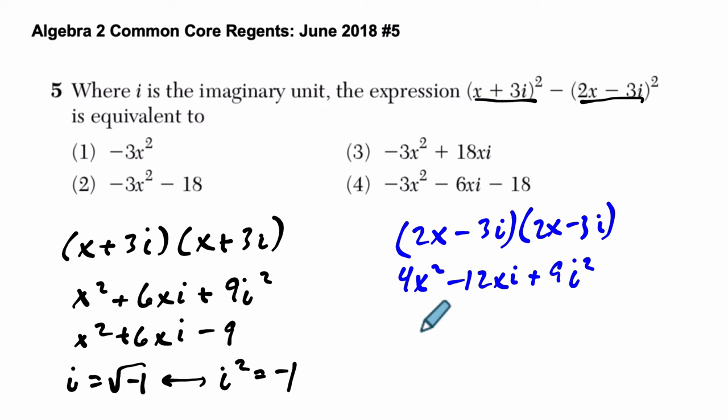Same reasoning again. If we have i squared, that's really just negative 1. So this is 4x squared minus 12xi minus 9.